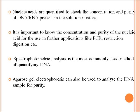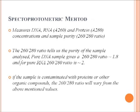The spectrophotometric method measures DNA or RNA at absorbance 260nm and protein at absorbance 280nm. The concentration and sample purity can be analyzed by taking the 260/280 ratio.